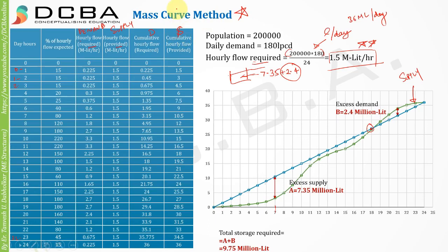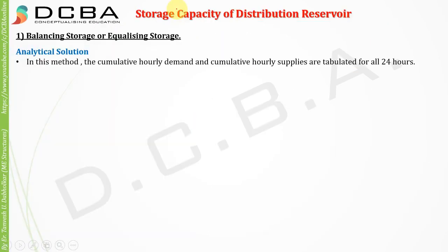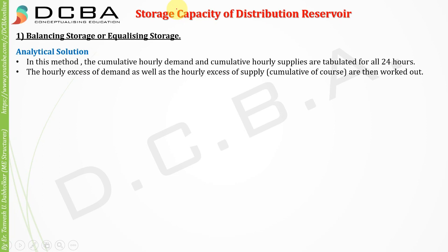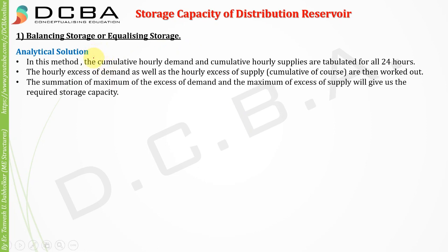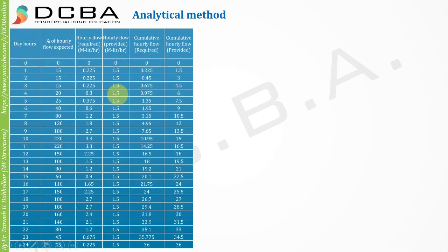Let us look at the next method, which is the analytical solution. In this method, the cumulative hourly demand and cumulative hourly supplies are tabulated for all 24 hours. The hourly excess of demand as well as the hourly excess of supply are then worked out. The summation of the maximum of excess demand and the maximum of excess supply will give us the required storage capacity.